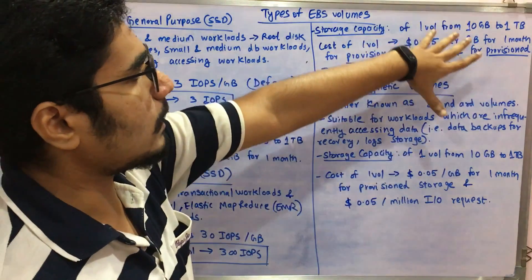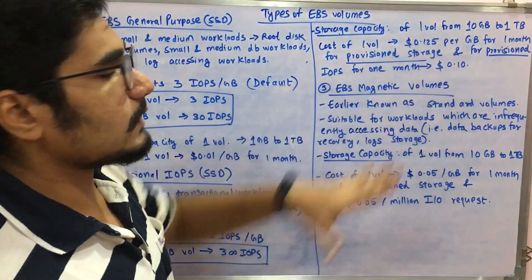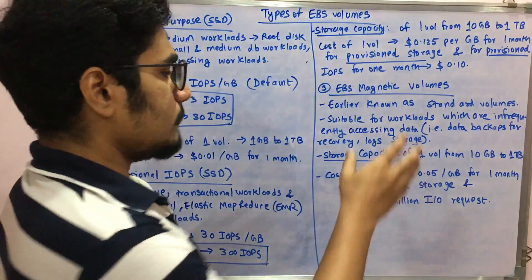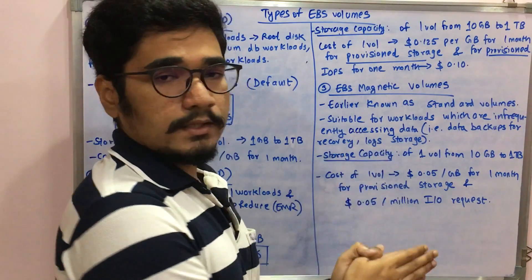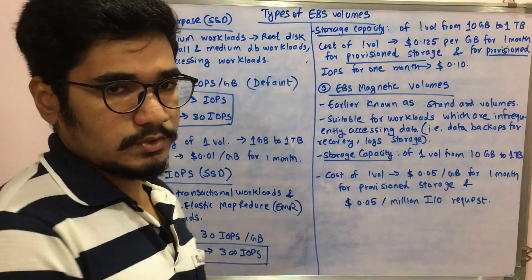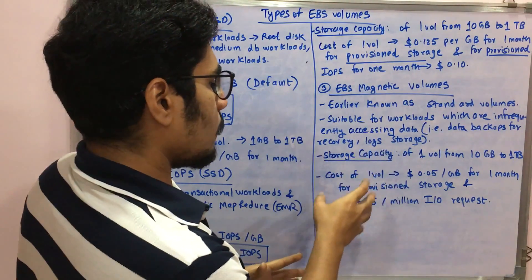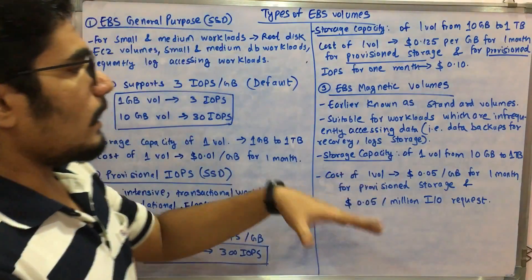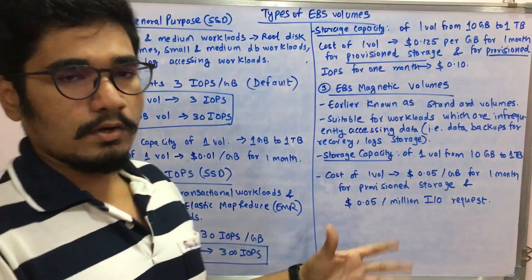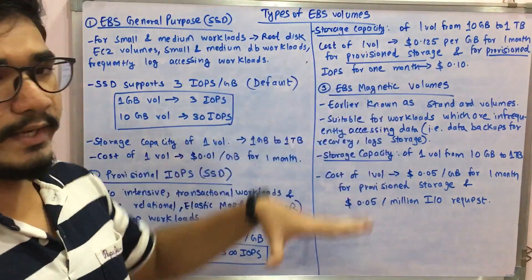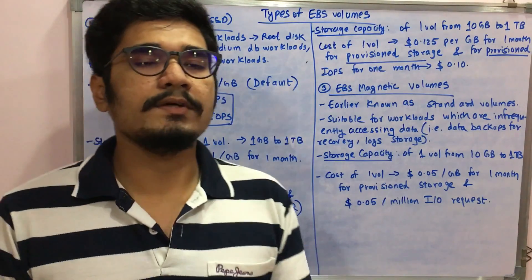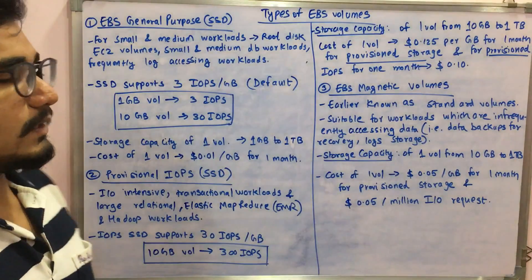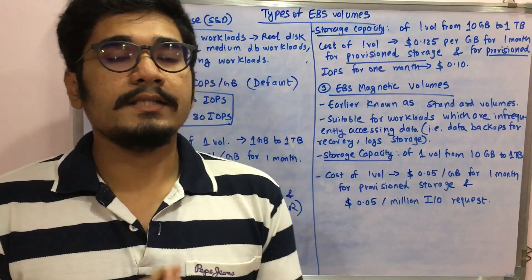The storage capacity for EBS Magnetic is 10 GB to 1 TB per volume, same as Provisioned IOPS. The cost ranges from $0 to $0.05 per GB per month for provisioned storage, and $0.05 per million I/O requests. So the cost is dependent on performance characteristics and usage.